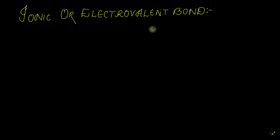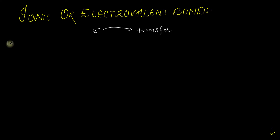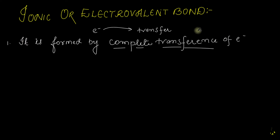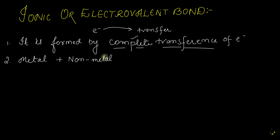Today's topic is ionic and electrovalent bond, which we have studied in types, and we are going to study it in complete description form. Ionic and electrovalent bond is formed by the complete transfer of electrons. The formation of the ionic bond requires a metal and a non-metal — meaning one will be a metal and the other will be a non-metal. So metal plus non-metal gives rise to the ionic bond or electrovalent bond.